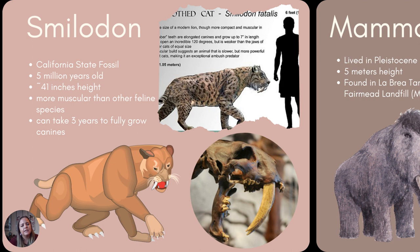The Smilodon is the California state fossil. It lived around 500,000 years ago to 11,000 years ago. It's actually a little smaller than most people think — around 41 inches in height. But it is the most muscular feline species we've ever seen, with the largest canines. It could take up to three years for their canines to fully grow to seven to twelve inches long. Baby sabers actually stayed with their parents for a lot longer while their canines came in.